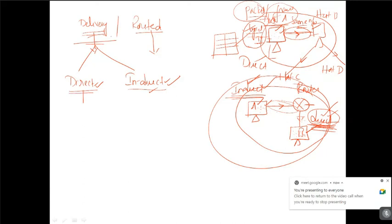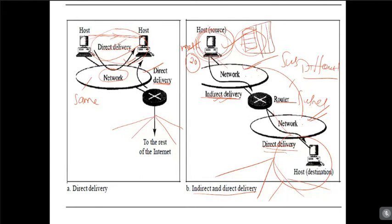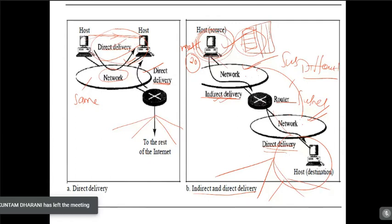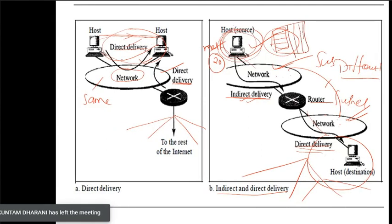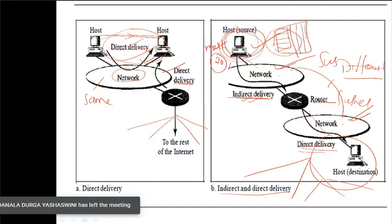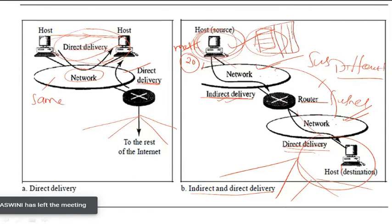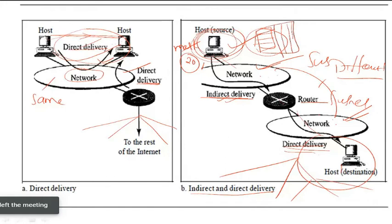In the last class, we saw that packet delivery to the destination happens in two ways: direct and indirect. Direct delivery occurs when two hosts are on the same network. Indirect delivery occurs when two hosts are on different networks, separated by a router — the information is sent through the router to reach the destination.